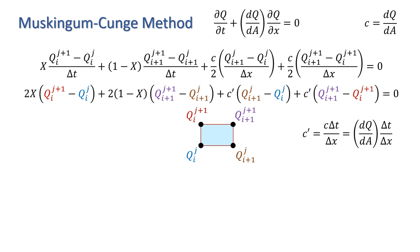We can now group together like terms, i.e. terms involving q_i^(j+1), q_i^j, q_(i+1)^(j+1), and q_(i+1)^j. And these are color coded here.